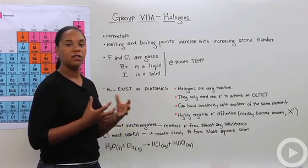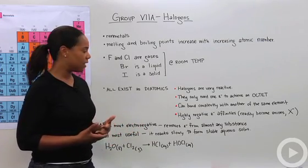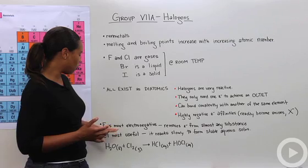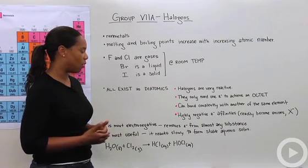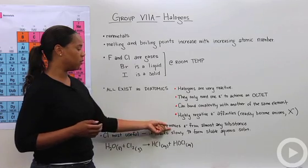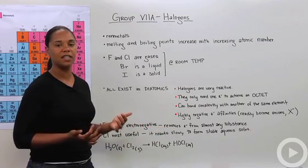More specifically, fluorine is the most electronegative atom on the periodic table, so it can remove an electron from almost any substance. It really wants that extra electron.